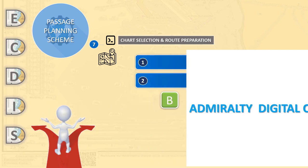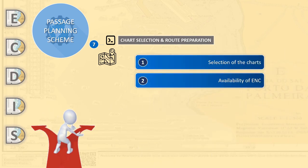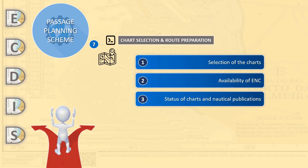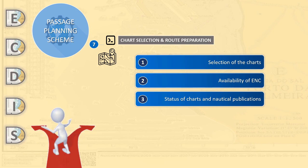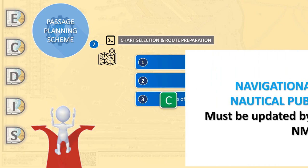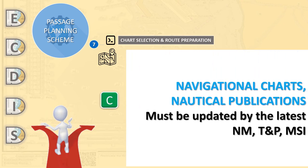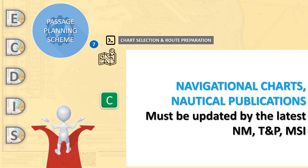Navigational charts and publication status should be up to date. Licenses first need to be installed and then cells themselves need to be imported afterwards. Subsequently, all navigational charts must be updated by the latest notices to mariners, which also include T&P notices and are amended according to the latest maritime safety information.